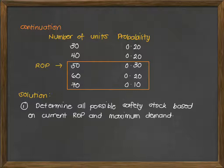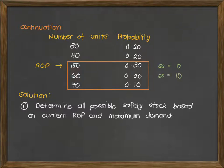Yung safety stock of 10 is the difference between 60 and 50. To write the safety stock levels: if we maintain at the current level of 50, the safety stock is zero. If we want to accommodate a demand of 60, which has a 20% chance, the safety stock is 10. And the safest option is to accommodate 70, which will give you a safety stock of 20.